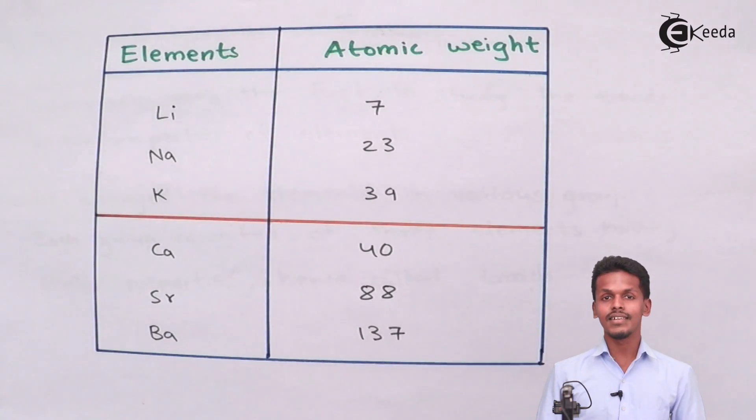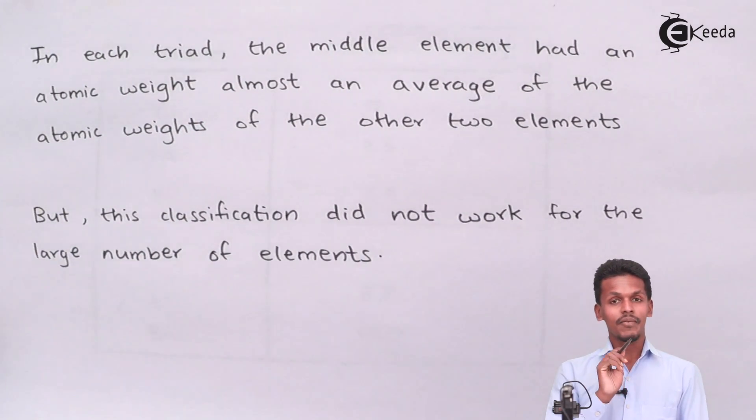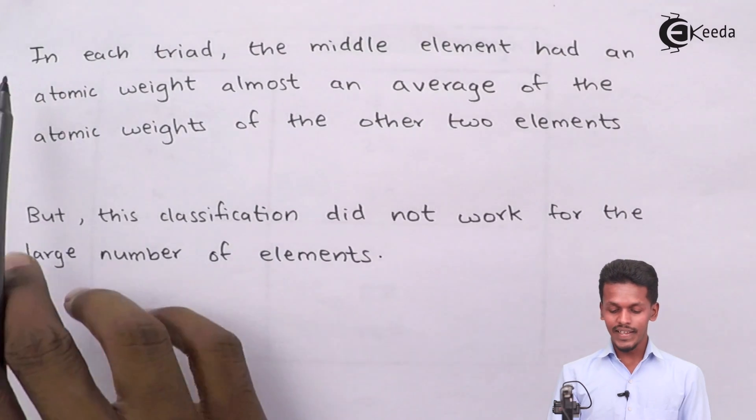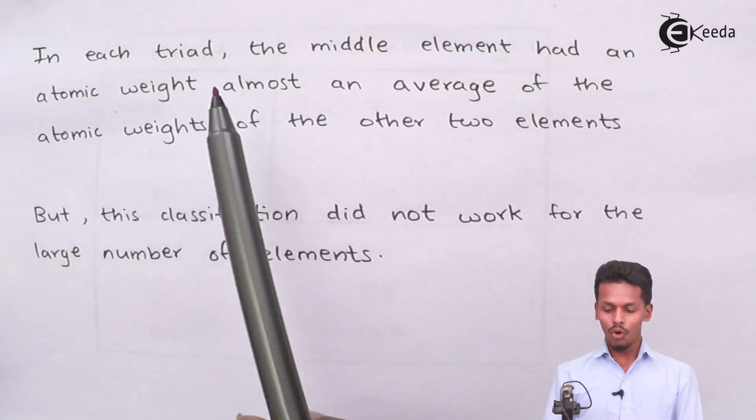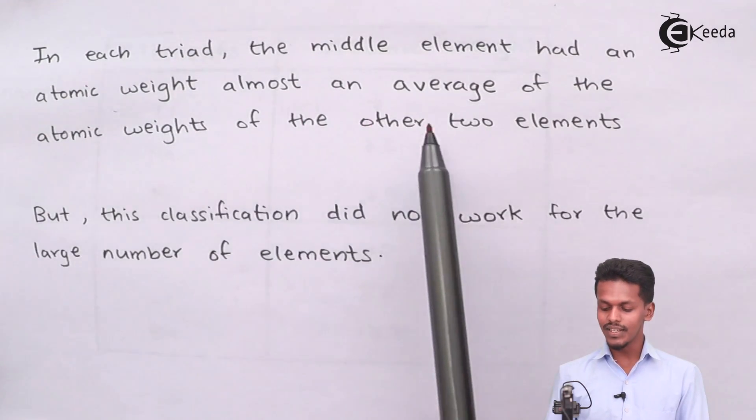But there is another kind of secret that was shown in the Dobereiner's triads. While arranging those elements, it was observed that in each triad, the middle element had an atomic weight almost an average of the atomic weights of the other two elements.